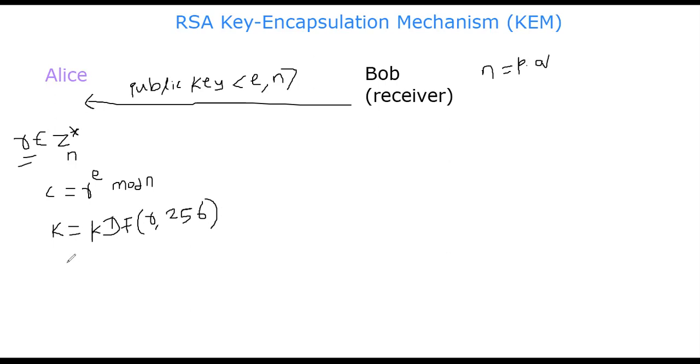Now Alice is going to use the key K to encrypt a message, AES for example, or any approved block cipher for that matter. She's going to use AES of some message M, she will encrypt using the key K she just derived. And this becomes the actual cipher text, let me call it C prime.